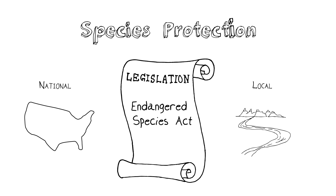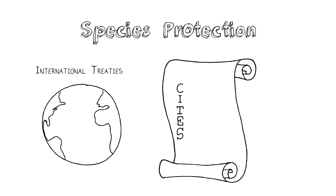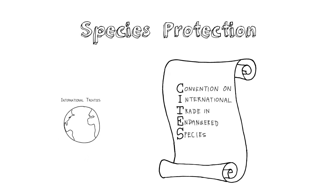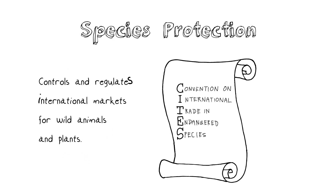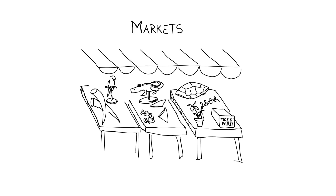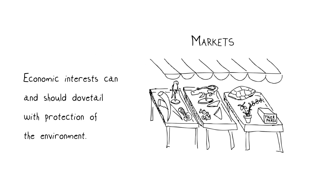Other types of statutory protection of species can be developed through international treaties such as the Convention on International Trade in Endangered Species, or CITES. This treaty controls or regulates international markets for wild animals and plants or their parts so that they're not driven to extinction or overexploited in ways harmful not only to the organisms and biodiversity, but to the markets themselves — an example of how economic interests can and should dovetail with protection of the environment.